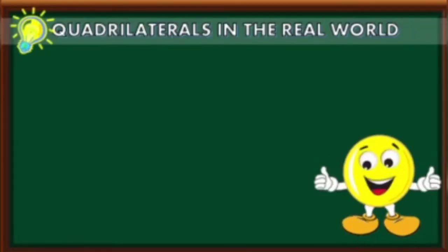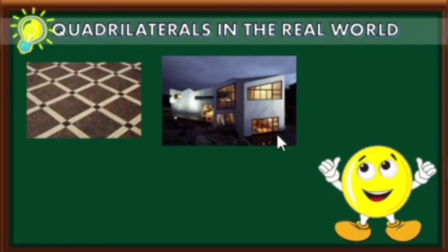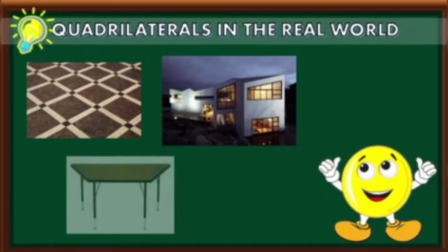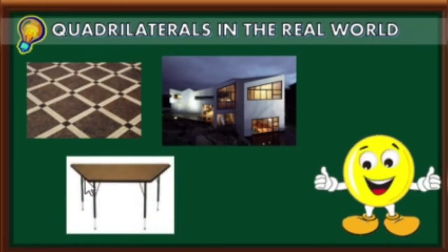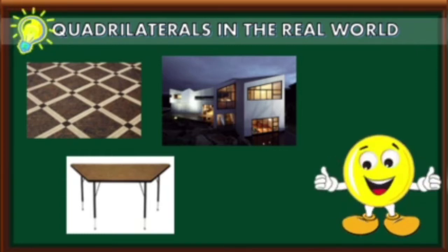Here are illustrations of quadrilaterals: first, the tiles; second, the windows; third, the top of the table. Now it is your turn to look around you and find objects that are quadrilateral in shape.